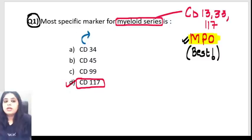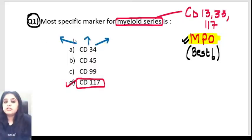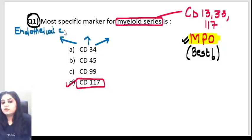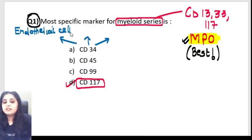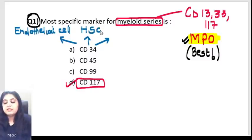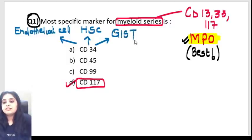Now let's revise the other CD markers. CD34 — can you tell me at least three things where CD34 is studied? It is a marker of endothelial cells, it is a marker of the hematopoietic stem cell (stem cells are CD34 positive), and there is one tumor of the stomach that is CD34 positive — that is GIST, which is also CD34 positive.